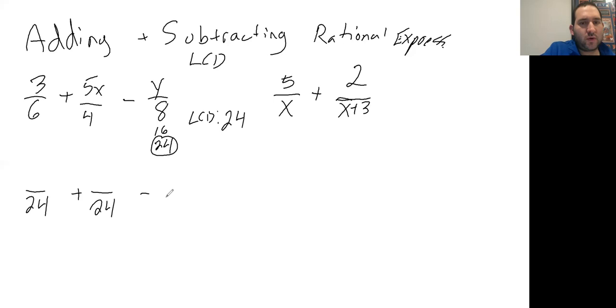What do you multiply by each of them in order to get 24? To get from 6 to 24, you multiply by 4, which means you have to multiply the numerator by 4. 3 times 4 is 12.